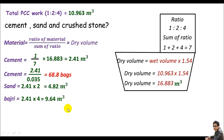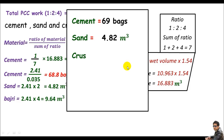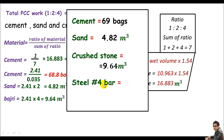Here are the final results: cement = 69 bags, sand = 4.82 cubic meters, crushed stone = 9.64 cubic meters, and steel = 744 kg (number 4 bar). This is how we estimate materials for a circular water tank. You can use this same method for any structure — the dimensions may change but the concept and calculation method remain the same. Thank you for watching, see you next time.